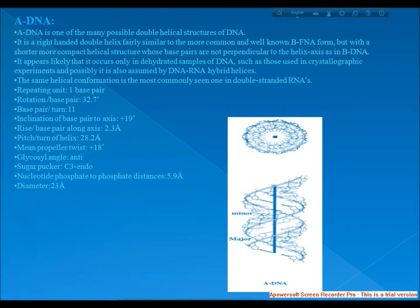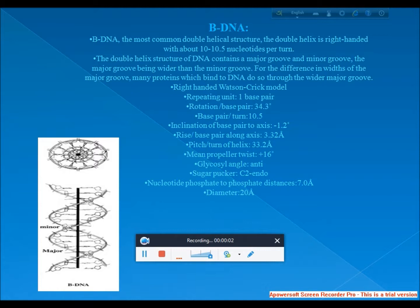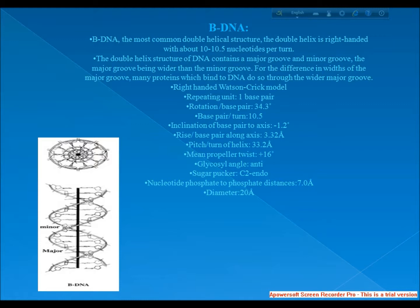Next, I come to B-DNA. B-DNA is the most common double helical structure. The double helix is right-handed, Watson-Crick model, with 10.5 nucleotides per turn. The double helix structure of DNA contains a major groove and minor groove, the major groove being wider than the minor groove. For the difference in widths of the major groove, many proteins which bind to DNA do so through the wider major groove.